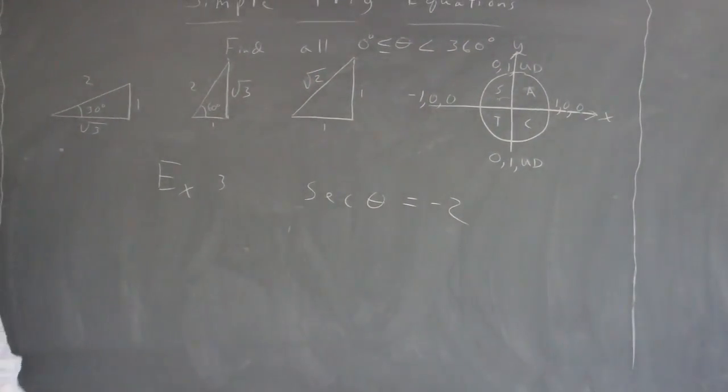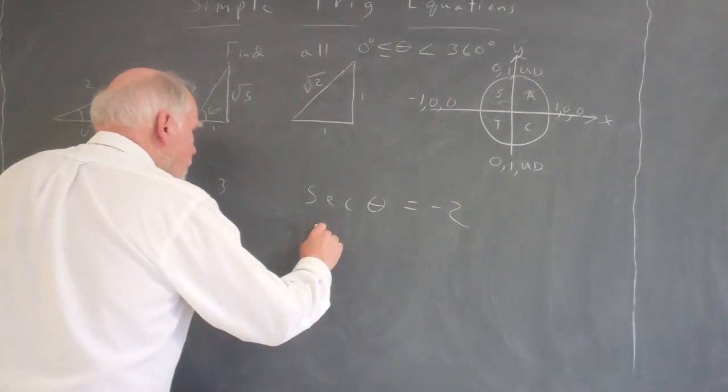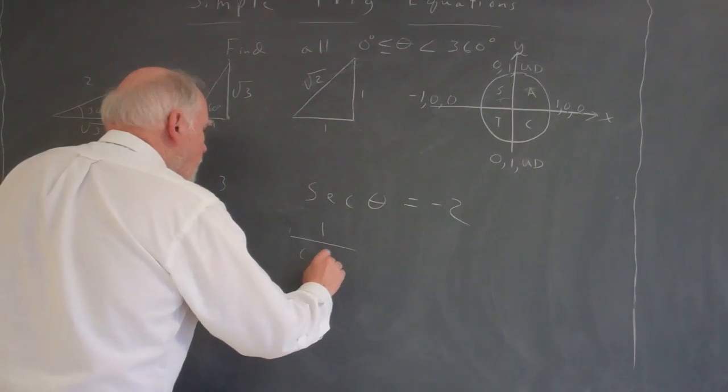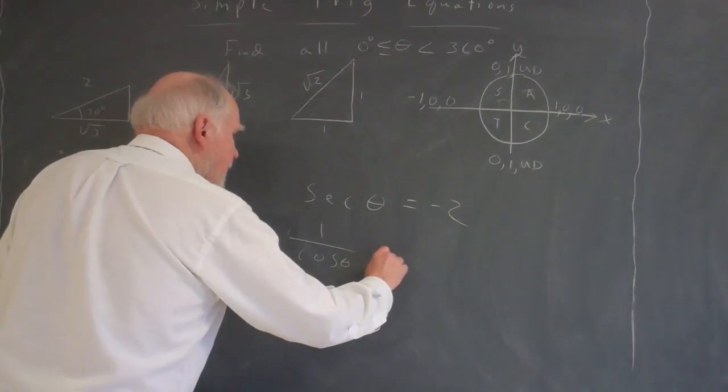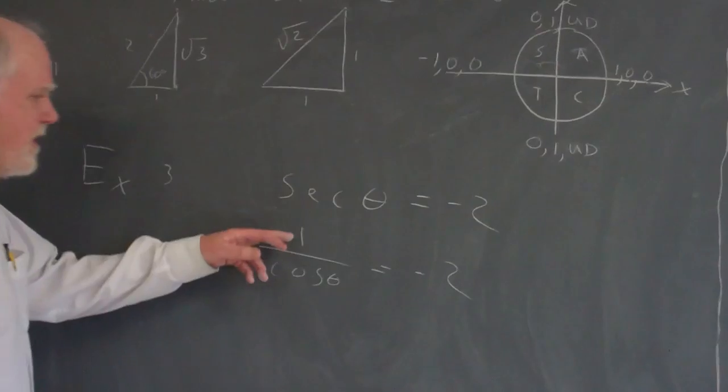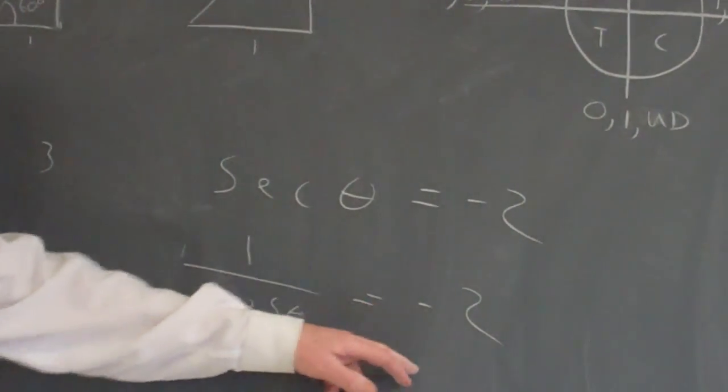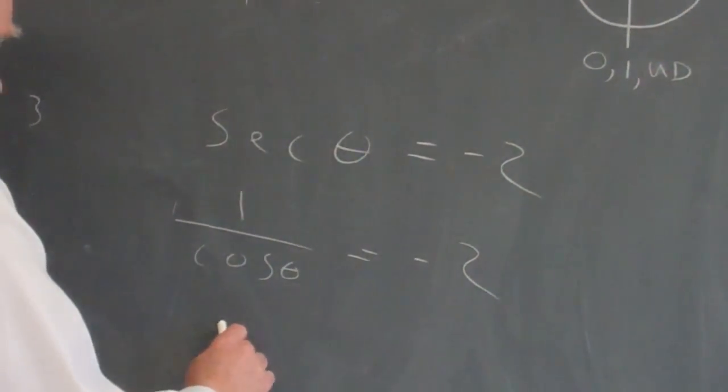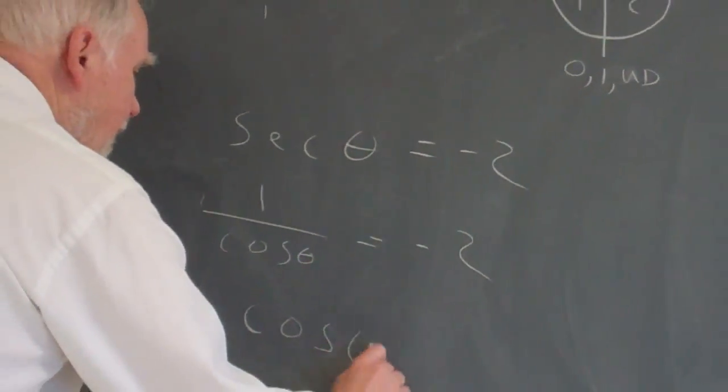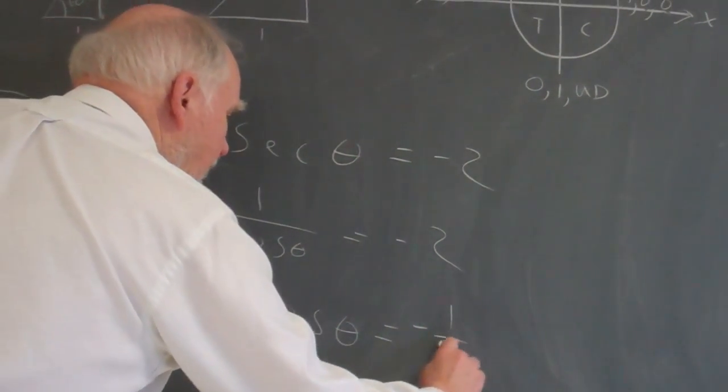Well, I don't like dealing with secants. I'd rather deal with sines, cosines, and tangents, and I realize that, of course, the secant is 1 over the cosine of theta, equals negative 2. And this is 1 over cosine equals negative 2 over 1. I can flip both of these, and I can say the cosine of theta equals negative 1/2.